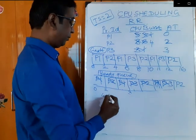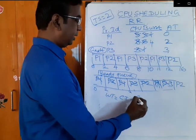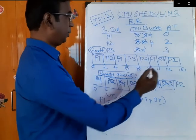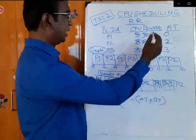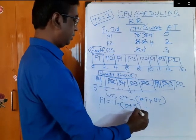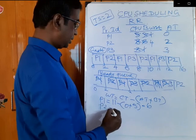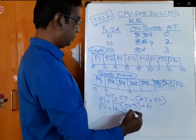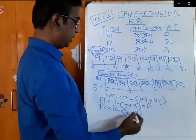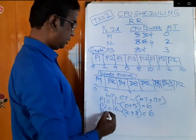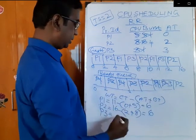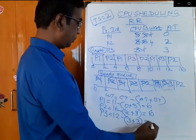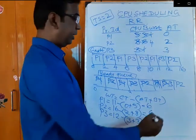Now calculating the waiting time: waiting time equals completion time minus arrival time plus CPU burst time. For P1, completion time is 11, minus arrival time 0, plus CPU burst time 5, so 11 minus 5 equals 6. For P2, completion time 16, minus arrival time 2, plus CPU burst time 8, equals 16 minus 10 which is 6. For P3, completion time 12, minus arrival time 3, plus CPU burst time 3, equals 6. Average waiting time is also 6.